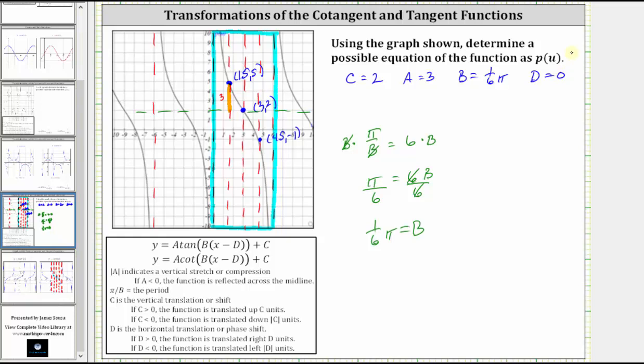And now we have all the information we need to write a possible function for the given graph. Remember the function is p of u, so we have p of u is equal to a times cotangent, which is three times cotangent of b times the quantity x minus d, where b is one-sixth pi. And then we're using u, not x, u minus d is u minus zero, which just gives us u. And then we have plus c, where c is two, giving us plus two. This is one possible function that will give us the given graph. I hope you found this helpful.